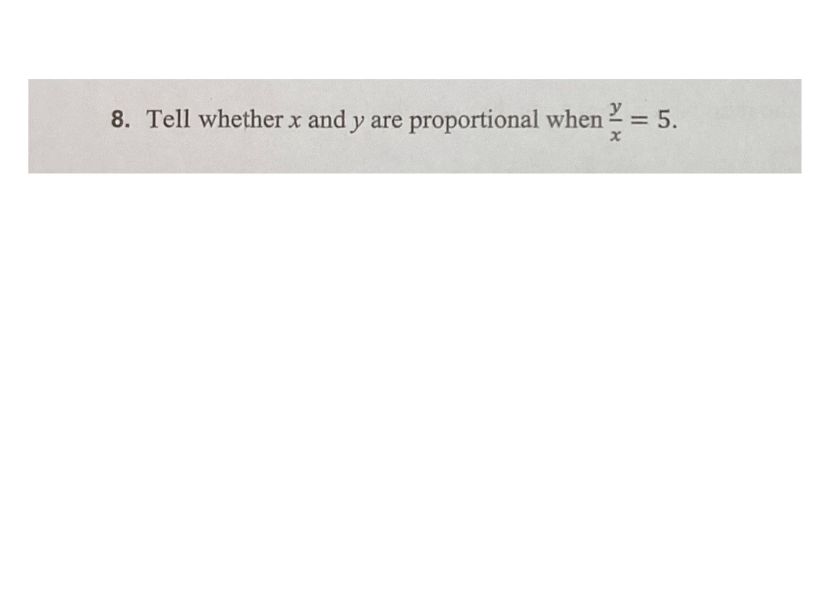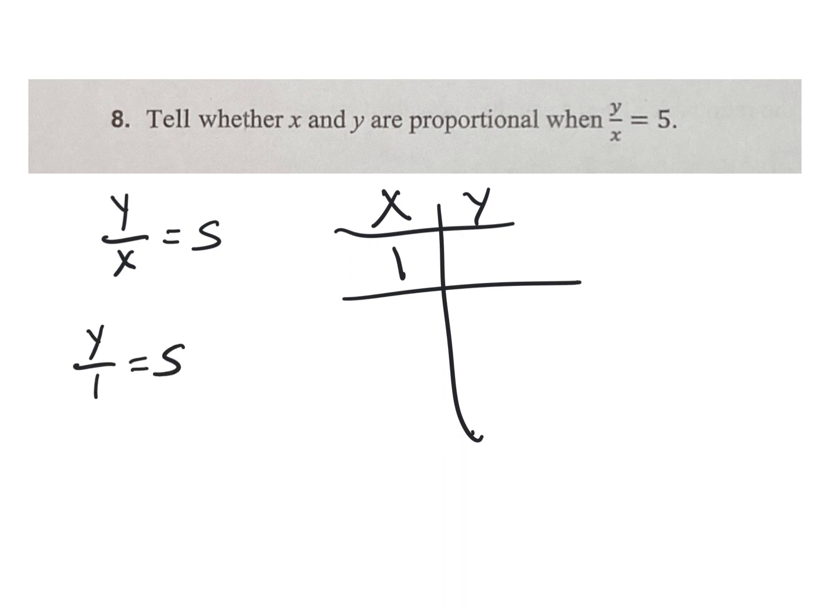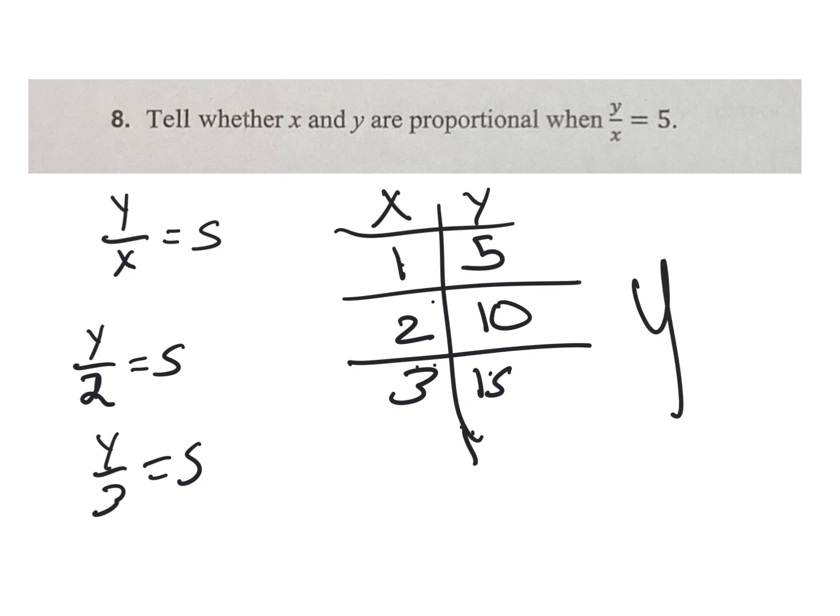We have to see if y divided by x equals 5 is proportional. So we have y/x equals 5. I'm going to do a little chart here. Let's do 1 for x. So y/1 equals 5, times each time by 5. That's going to give me y equals 5. If that's 2, then it's going to be 10. If that's y/3 equals 5, that's going to be 3x and then 15 for y. Let's see if they're proportional. 2 times 5 is 10, 1 times 10 is 10. 3 times 10 is 30, 2 times 15 is 30. So yes, that is a proportional statement.